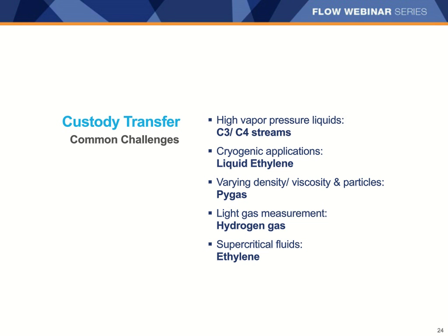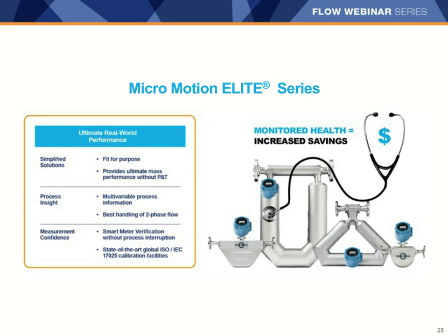Micromotion meters measure mass flow directly, which eliminates a lot of these challenges. However, not all Coriolis meters are equivalent on these difficult applications, especially when it comes to two-phase flow capabilities. Micromotion Elite meters offer direct mass metering — all these products are traded on a mass basis. They offer multivariable measurement with superior mass flow and density measurement capabilities under real-world conditions, so when your pressures and temperatures aren't the same as your lab environment. The volumetric output can be useful in ensuring tanks aren't overfilled even if the transaction is completed in mass. We provide maintenance-free operation even under heavy flashing and two-phase flow conditions. And smart meter verification enables you to check the meter integrity periodically and minimizes your proving requirements without interrupting the process at all.